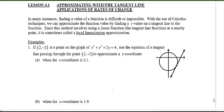Welcome to Unit 4. In our first lesson in Unit 4, we'll talk about two things: approximating with the tangent line and applications of rate of change. So when I talk about approximating with tangent line, in many instances in not just calculus but just life, finding a value of a function is pretty difficult or impossible. Now with the use of calculus techniques, we can actually approximate the function value by finding a y value on a tangent line to the function. Now since this method involves using a linear function or the tangent line function at a nearby point, it is sometimes called local linearization approximation or some textbooks also use this idea called the tangent line approximation.